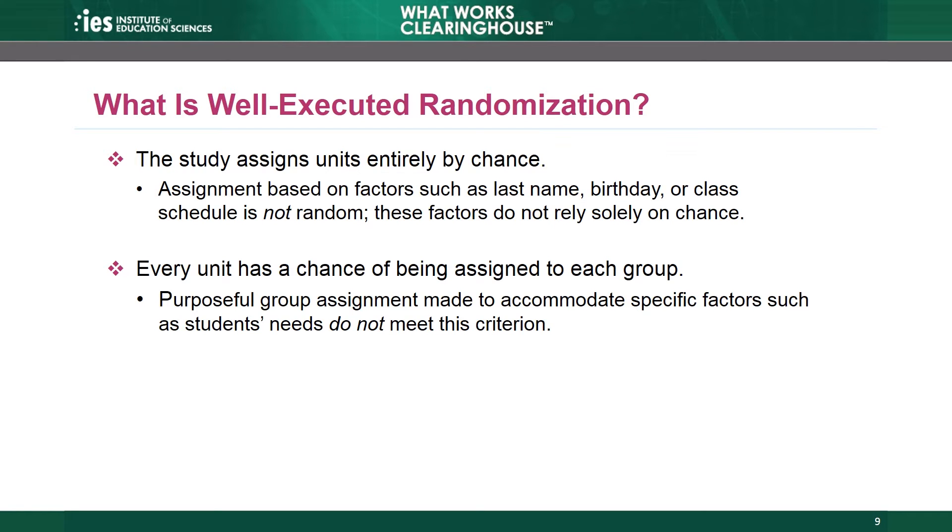The requirement that everyone must have a chance at assignment means that the analytic sample cannot include anyone whom the study did not randomly assign. So if a researcher assigns someone in the analytic sample to a particular condition, the WWC cannot review the study as a randomized controlled trial. This issue arises when researchers randomly assign some, but not all, students to conditions. For example, researchers may purposely assign a student with significant behavior challenges to the intervention group. Researchers typically exclude these purposefully assigned units from the analysis — if so, the study can be reviewed as an RCT. But if the study includes the student in the analytic sample, the WWC cannot review it as an RCT.